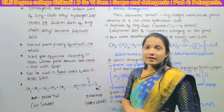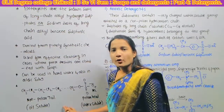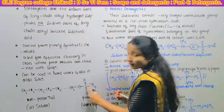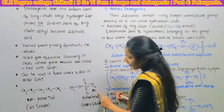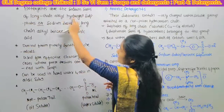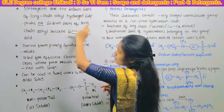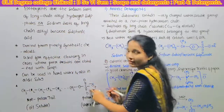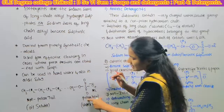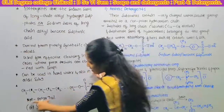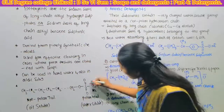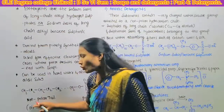Let's see the general formula of detergents and how to represent detergents. In soap we represent COO minus Na plus. Here this part is the hydrocarbon part and this part is the polar part. It is a non-polar tail and this one is the polar head, because here we have O minus Na plus.